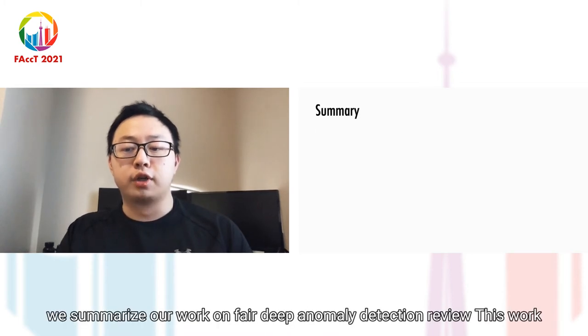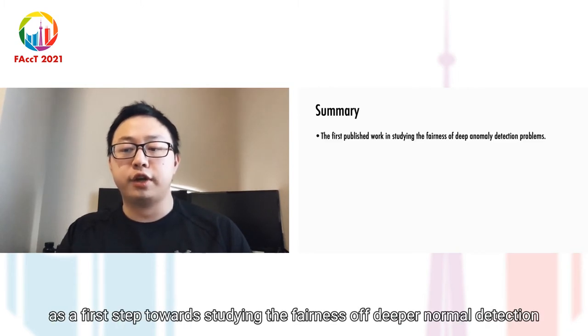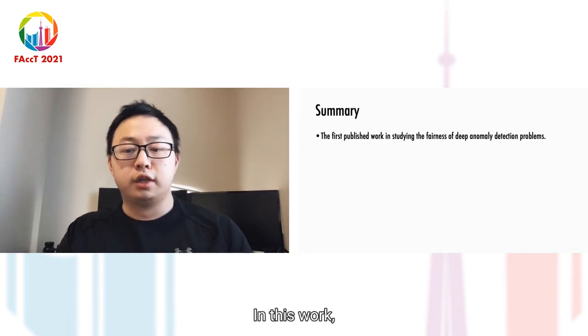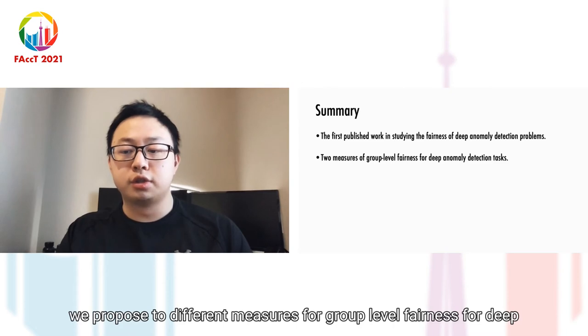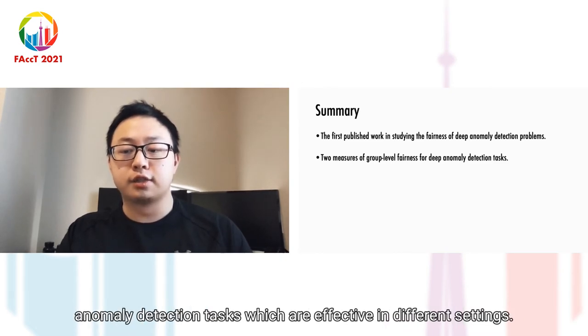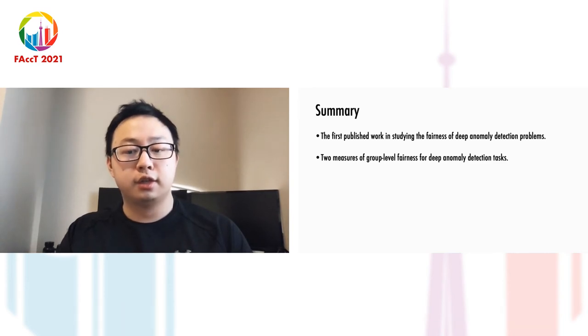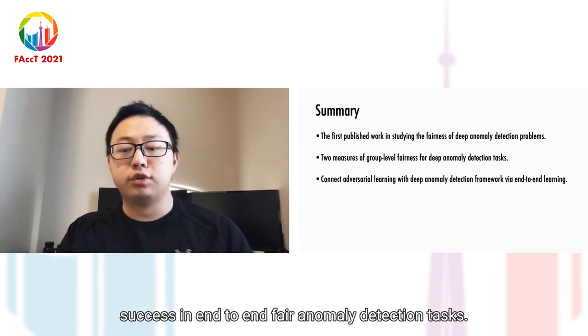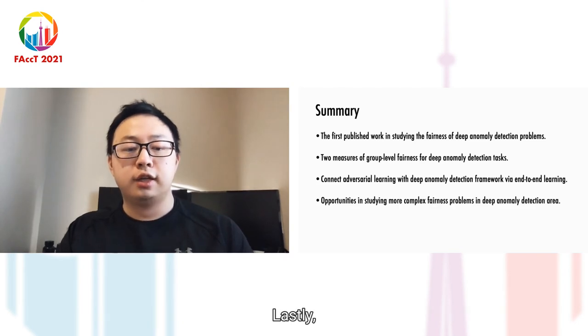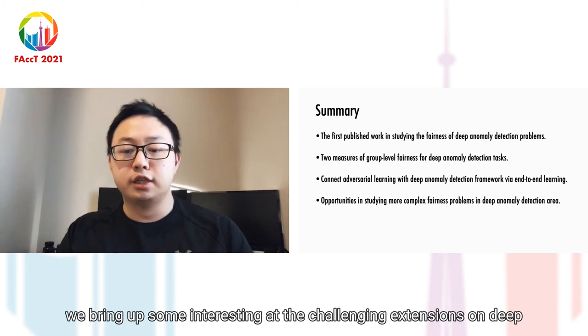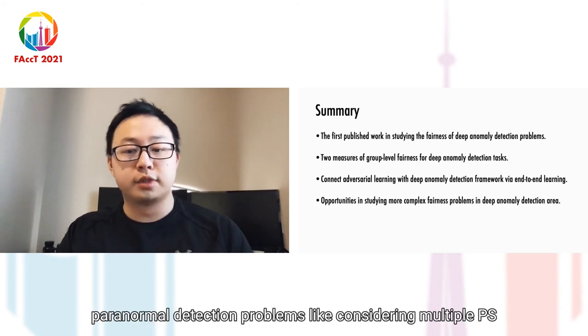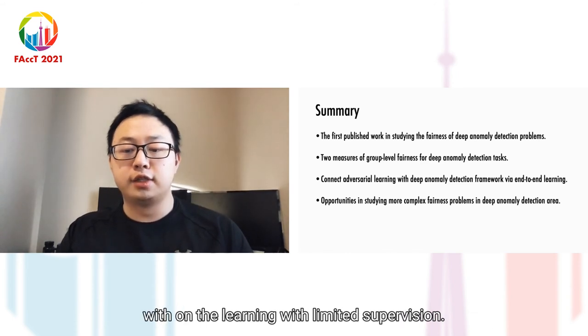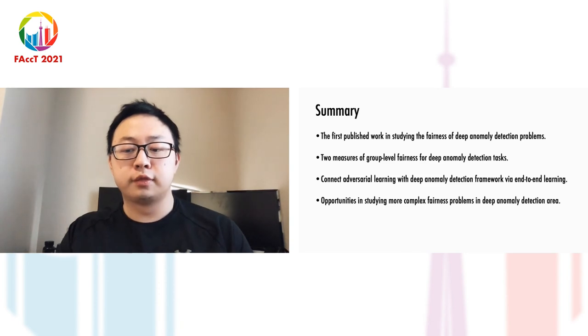Finally, we summarize our work on Fair Deep Anomaly Detection. We view this work as a first step towards studying the fairness of Deep Anomaly Detection problems. In this work, we propose two different measures for group-level fairness for Deep Anomaly Detection tasks, which are effective in different settings. Moreover, we connect adversarial learning with DeepSVDD and demonstrate its success in end-to-end Fair Anomaly Detection tasks. Lastly, we bring up some interesting and challenging extensions on Deep Fair Anomaly Detection problems, like considering multiple PSVs and learning with limited supervision. That's all for our presentation. Thank you very much for your attention.